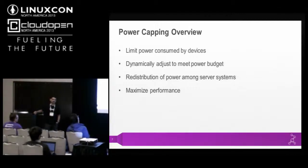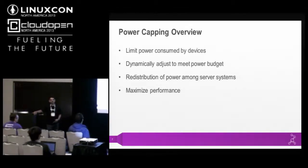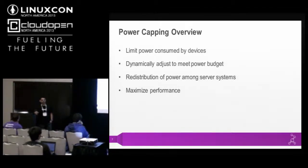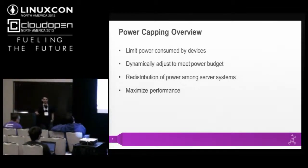Another important aspect is the ability to redistribute power among server systems. If some server is running a time-critical load while others are relatively idle, you can distribute extra power from idle servers to the critical one, so it can run at full throttle and give better performance. Redistribution can always maximize performance. This is also true within a single system — you can redistribute power between DRAM, CPU, and GPU based on workload. For example, for a CPU-intensive load you can move power from DRAM to CPU, or for gaming you can shift power to the GPU.